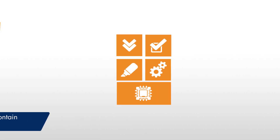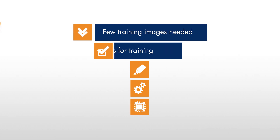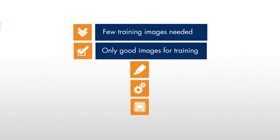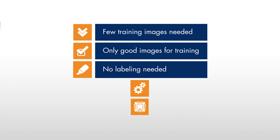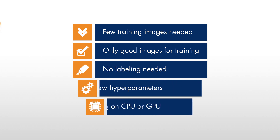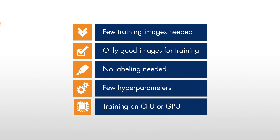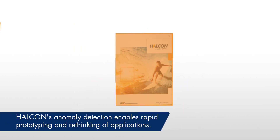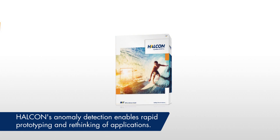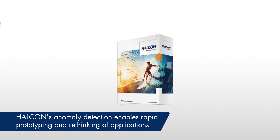To train this deep learning network, only a relatively low number of good images is required. Consequently, there is also no need to label any data. Combined with the simple and flexible workflow, Haukon enables fast and easy prototyping and also allows you to easily rethink existing applications.